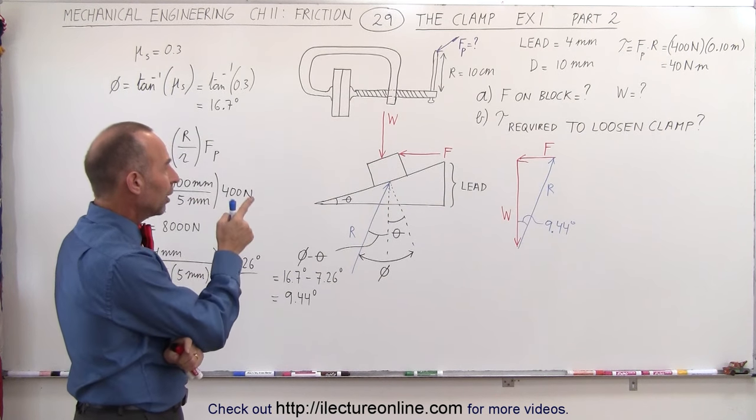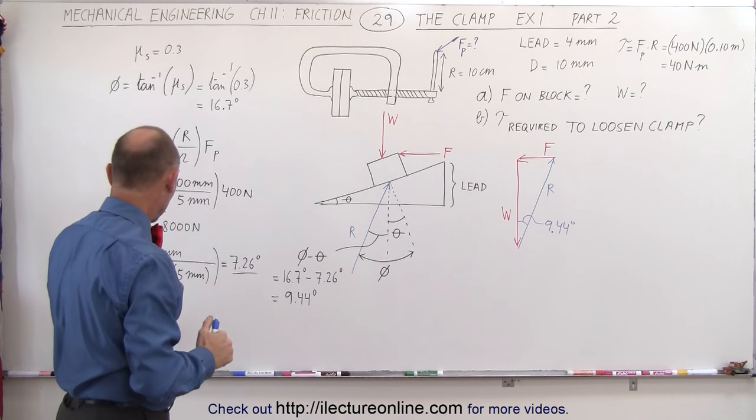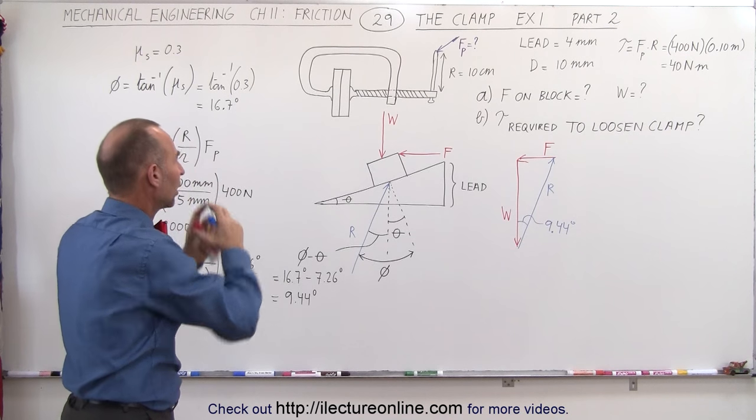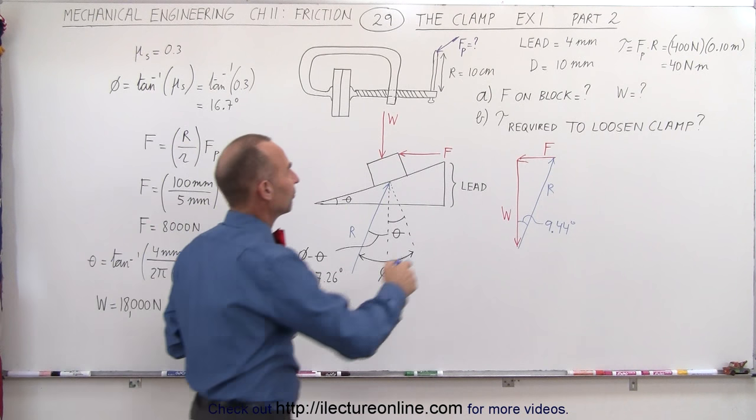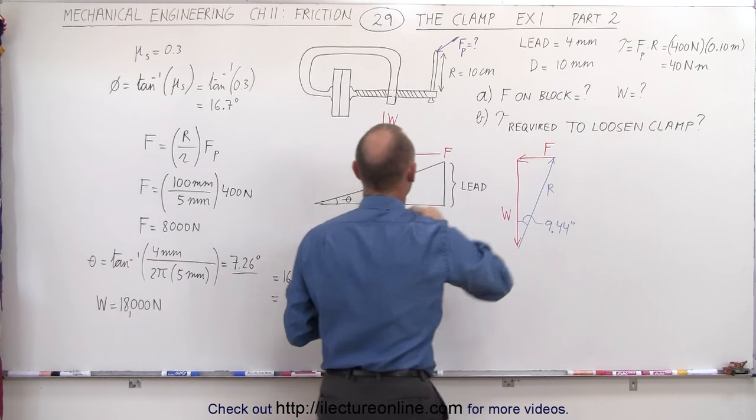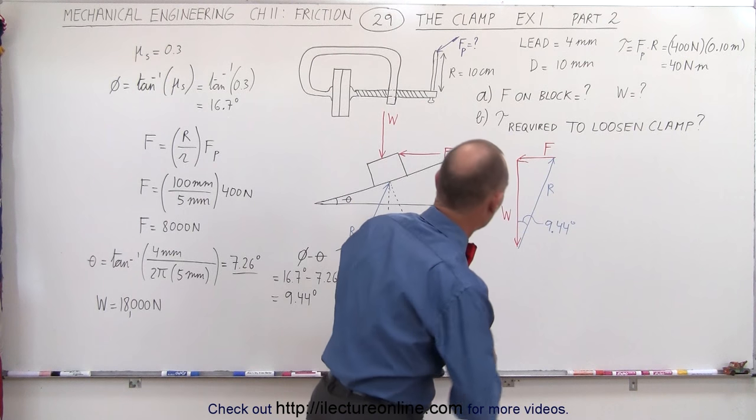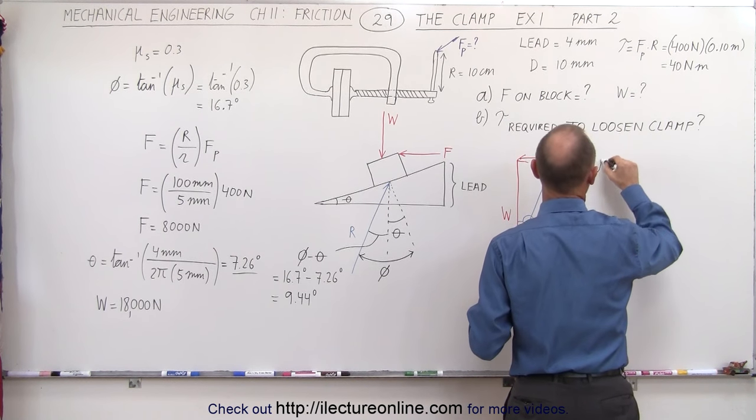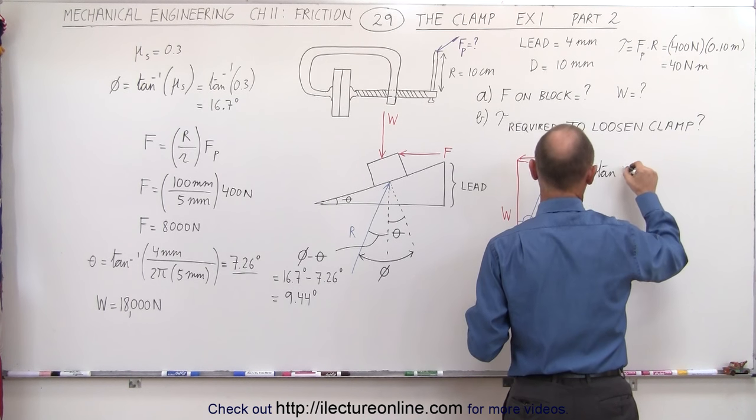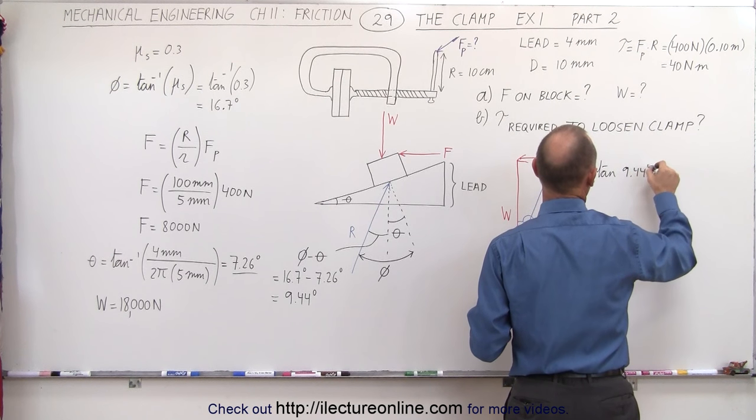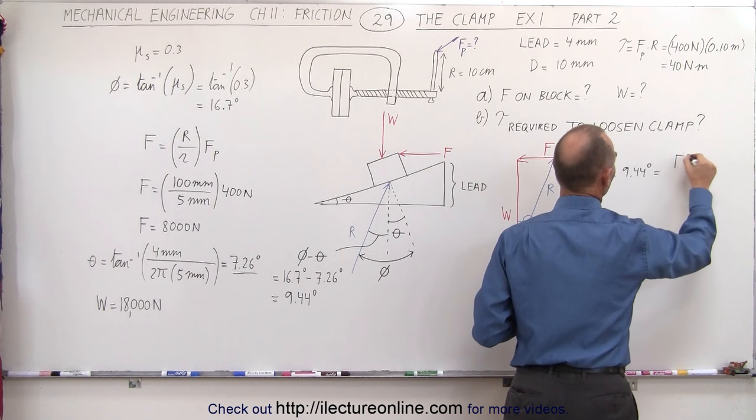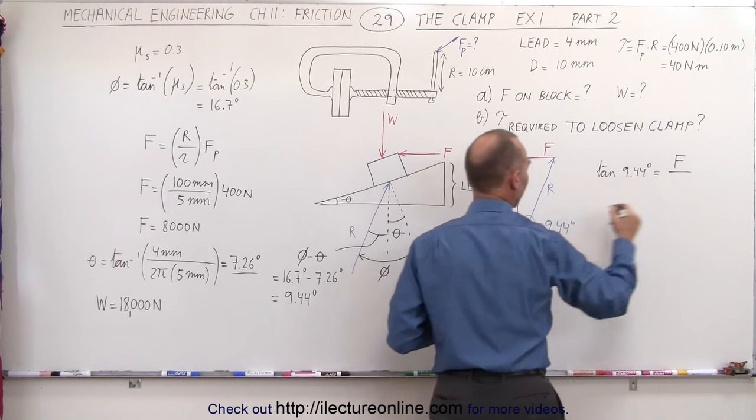Okay, now we know W, the weight. That was 18,000 newtons, the force that the clamp pushed the two blocks together with. And we need to find what F is. So we can use the tangent of that angle. We can say that the tangent of 9.44 degrees is equal to the ratio of the opposite side, which is F, divided by the adjacent side, which is W.